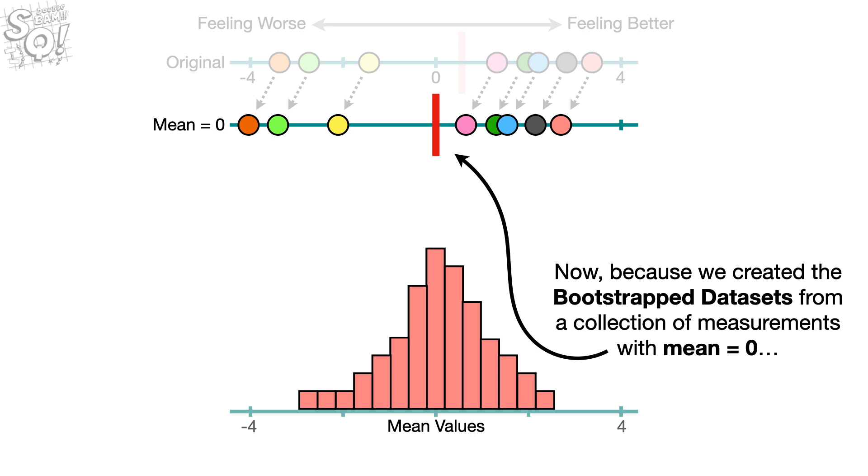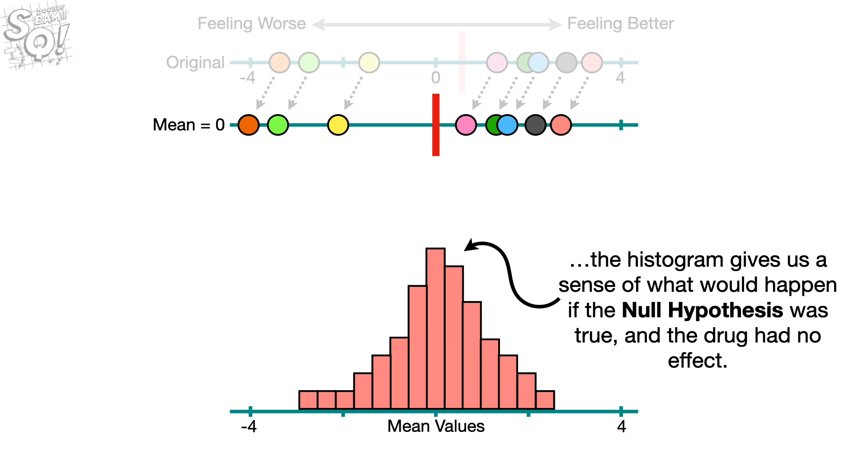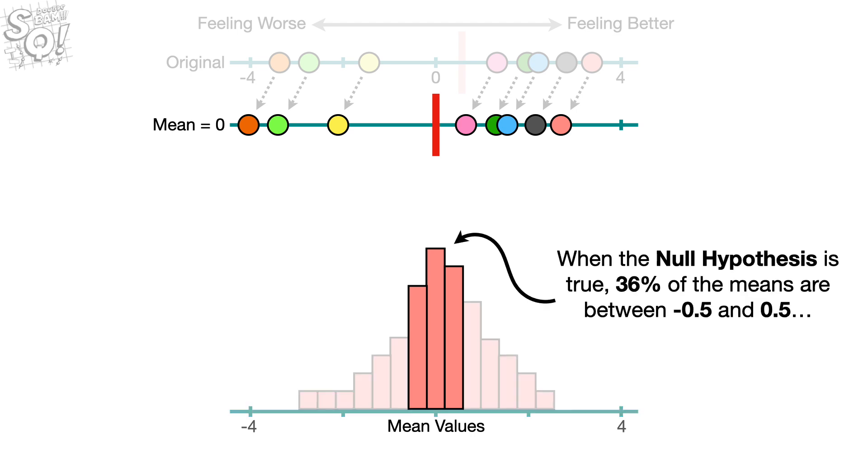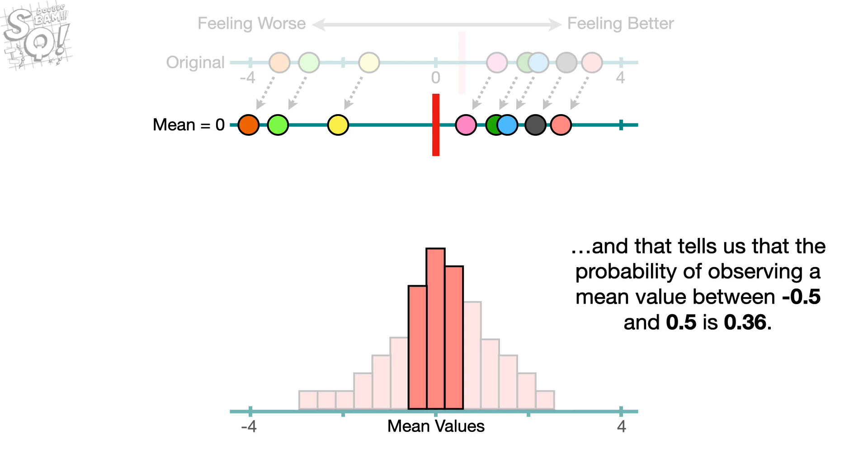Now, because we created the bootstrapped data sets from a collection of measurements with mean equal to zero, the histogram gives us a sense of what would happen if the null hypothesis was true and the drug had no effect. When the null hypothesis is true, 36% of the means are between negative 0.5 and 0.5. And that tells us that the probability of observing a mean value between negative 0.5 and 0.5 is 0.36.